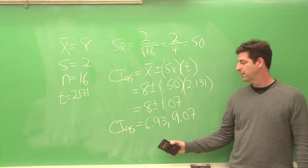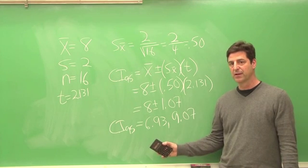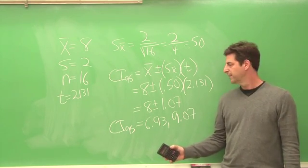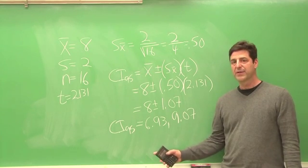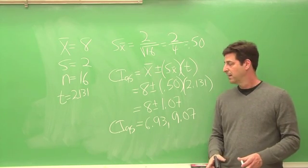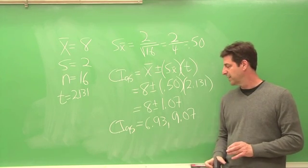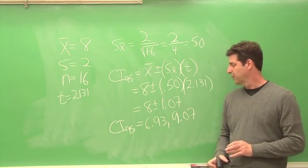So that's going to be our 95% confidence interval. Here's how we interpret and report it: We are 95% confident that our population mean is contained within the interval that ranges from 6.93 to 9.07.